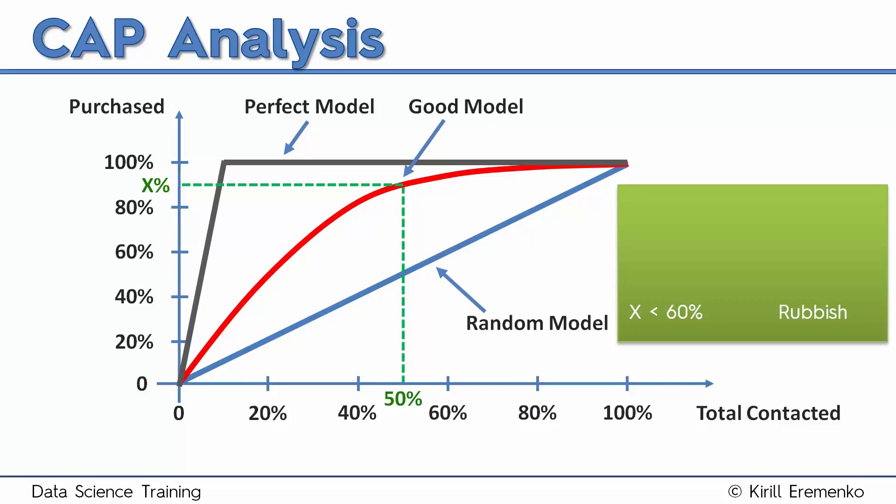So if X is less than 60%, the model is rubbish. Basically it's not useful at all. You can create a better one. Probably you can create a better one and you need to try again.